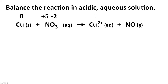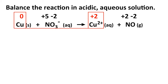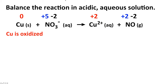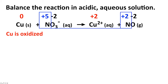Copper 2+ has a charge of plus two, so its oxidation number is plus two. In nitrogen monoxide, oxygen has an oxidation number of minus two, so nitrogen must be plus two so that the total charge is zero for this neutral compound. Copper's oxidation number went from zero to plus two — an increase, so copper was oxidized. Nitrogen went from plus five to plus two — a decrease, so nitrogen was reduced. Oxygen's oxidation number did not change.